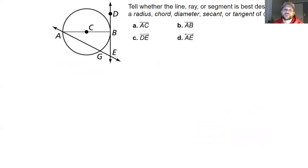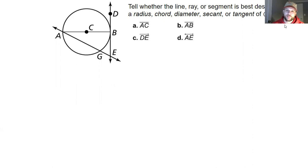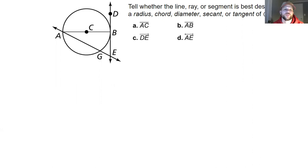For a couple of example problems, we are going to identify whether each line, ray, or segment is best described as a radius, chord, diameter, secant, or tangent of circle C. We are looking at lines AC, AB, DE, and AE in this circle.